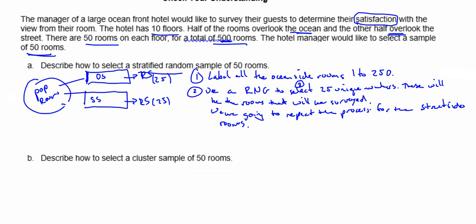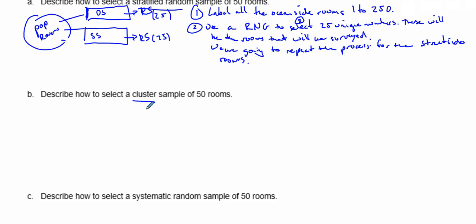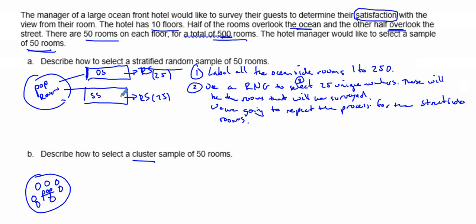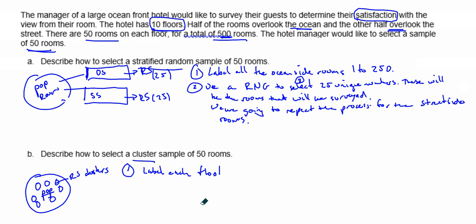Next is the cluster sample. In cluster sampling, we identify natural clusters within our population. Our population is the rooms, and the natural clusters here are the floors — we have ten floors. So our clusters are the floors. We then randomly select one cluster and take all of the rooms in that cluster.